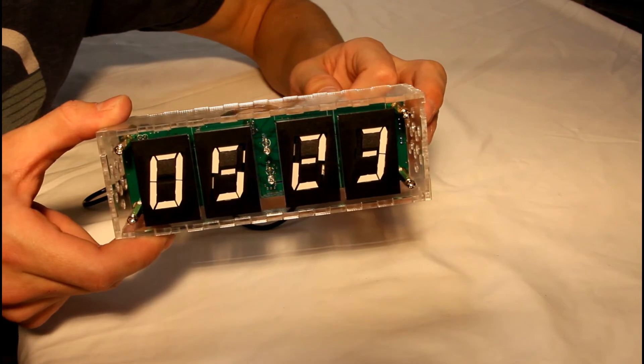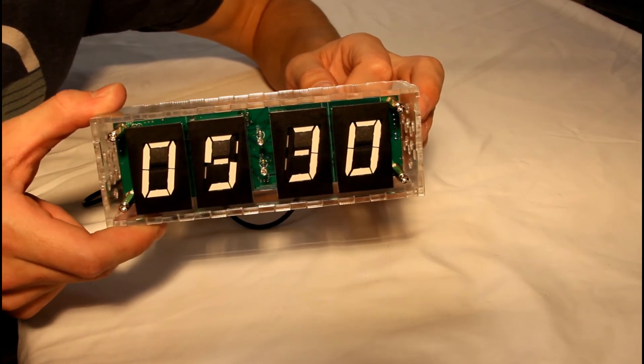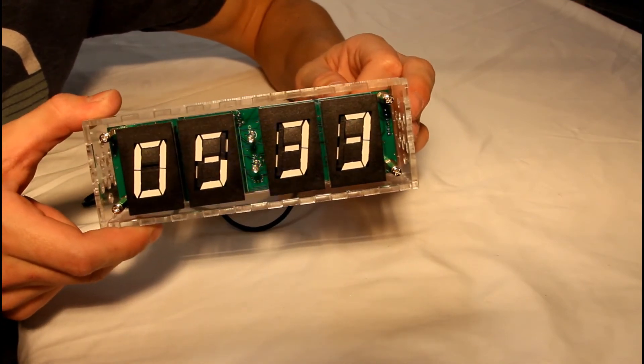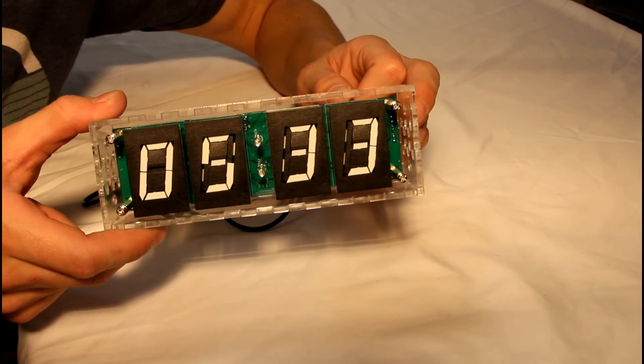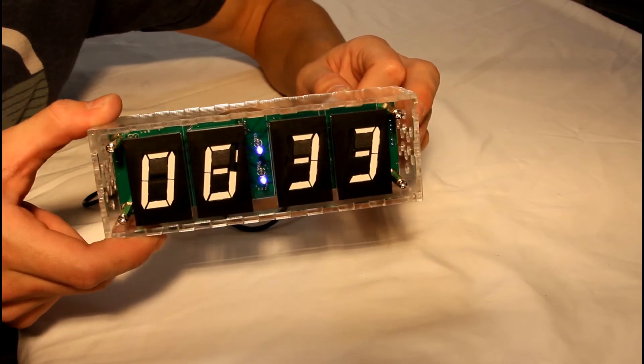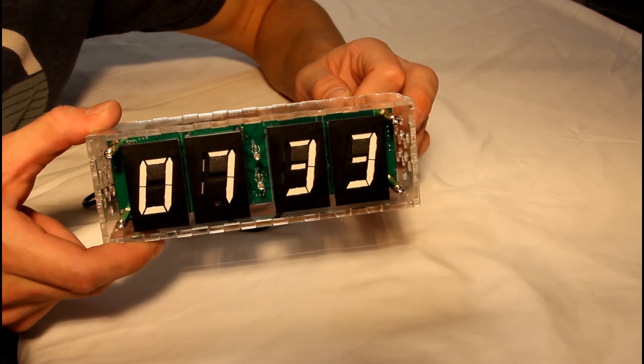Button's kind of sensitive, may need to add a little more debounce there in the code, as you can see. So each time you set this, it will update and set the real-time clock chip. Each time you change the hours, it will do this nice little graphic I programmed in.